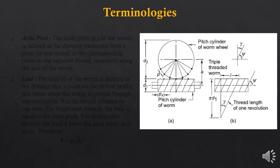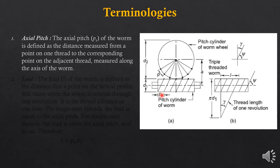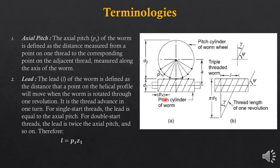Some other terminologies: axial pitch px is the distance between two successive points on the screw thread. The lead is the distance moved when you give the screw one full rotation. Lead can be calculated as px times z1 — that is, lead equals pitch times the number of starts. That is the formula for the lead.